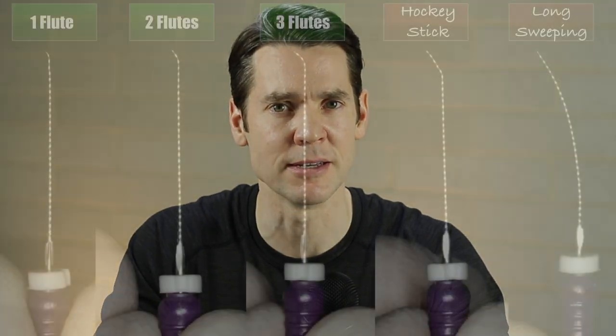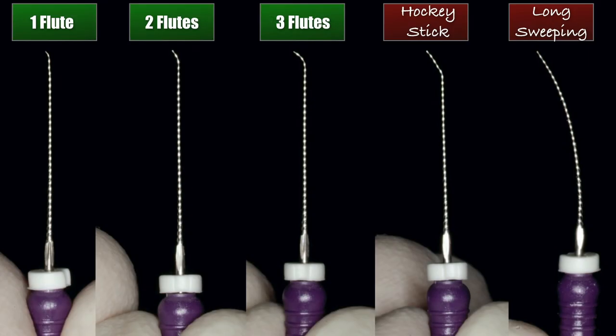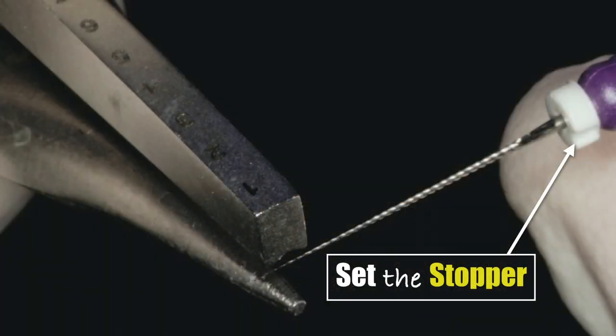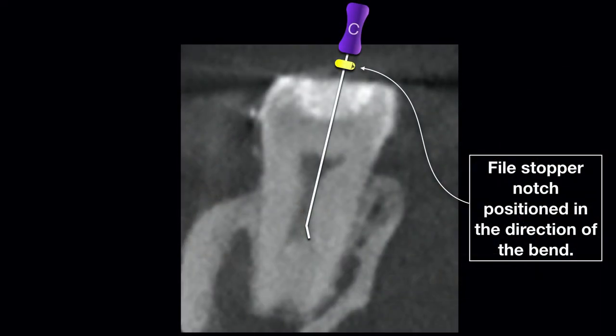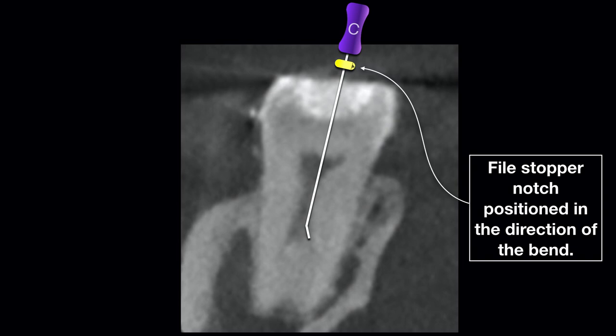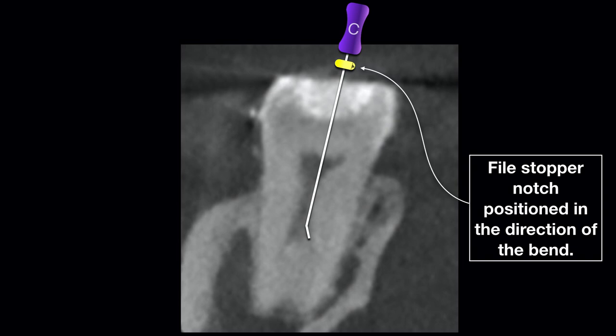The more conservative method is strategic file bending. Strategic file bending involves placing a bend in the last 1, 2, or 3 flutes of the file — not hockey stick bends or long sweeping bends, but bends in just the first 1, 2, or 3 flutes. Once the file is bent, take the silicone stopper and align it in the direction the file is bent, then measure and adjust the file to the predetermined estimated target vertical depth.